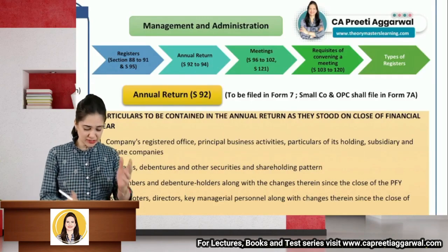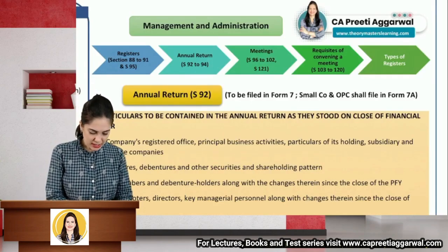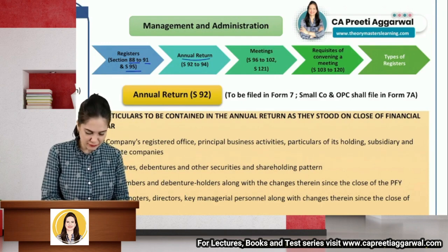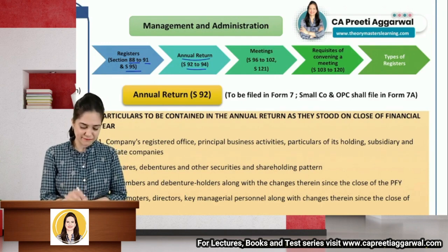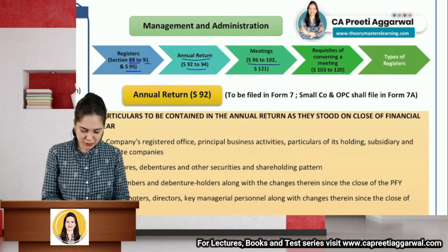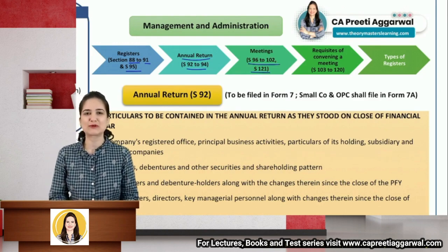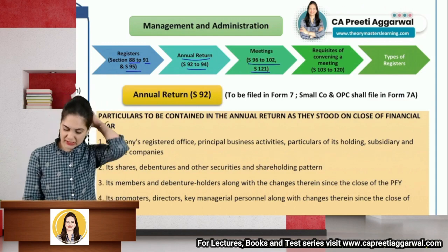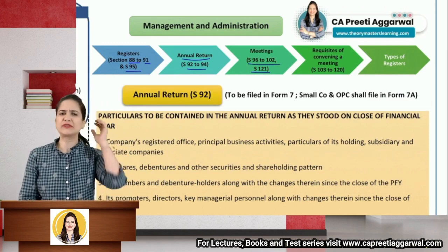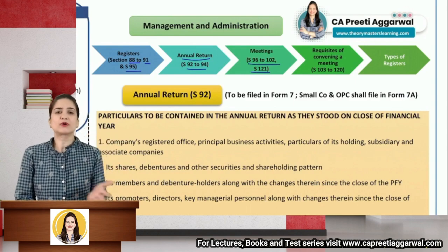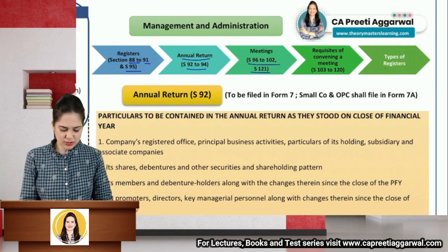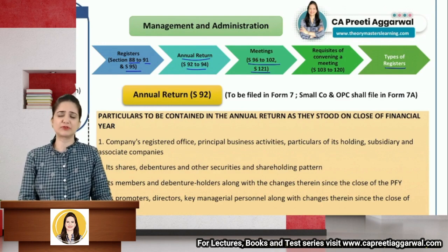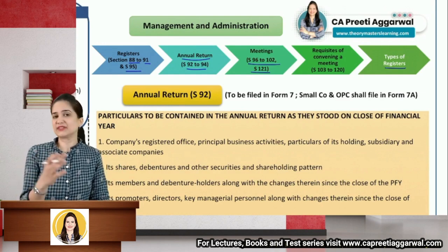In this unit on Management and Administration, we are going to cover sections 88 to 91, section 95, annual return from sections 92 to 94, meetings discussed under sections 96 to 102 and section 121, then requisites of calling a meeting under sections 103 to 120, covering provisions of quorum, proxy, and types of registers.